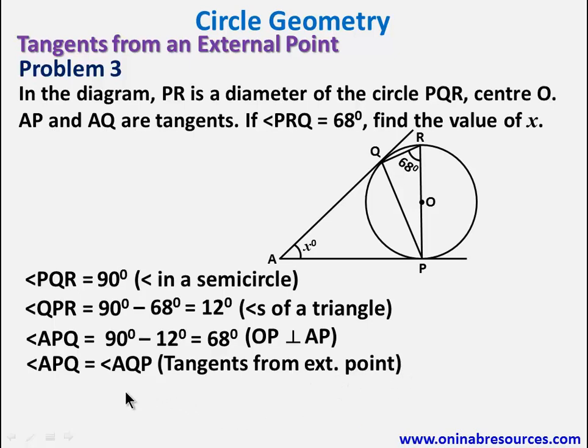So from there, we can calculate the value of X to be 180 minus 2 times 68 degrees. Angles of isosceles triangle. And that gives 44 degrees. And that's the end of solution to problem 3.